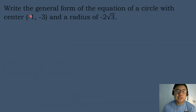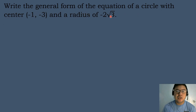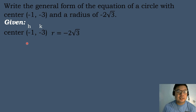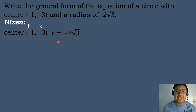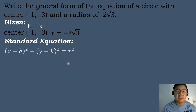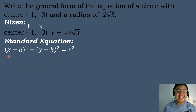Let's have our next example. Write the general form for the equation of a circle with center (negative 1, negative 3) and a radius of negative 2 square root of 3. Let's list down the following given. The center of the circle is at coordinates negative 1, negative 3; the value of h is equal to negative 1, the value of k is equal to negative 3, and the radius of the circle is equal to negative 2 square root of 3. To get the general form, we must first get the standard equation using the center-radius form: the quantity of x minus h to the second power plus the quantity of y minus k to the second power equals r to the second power.